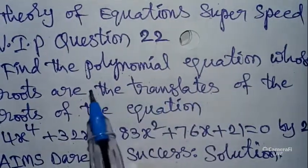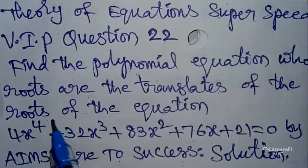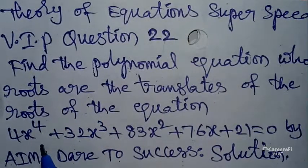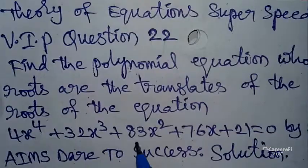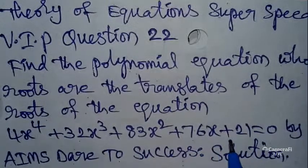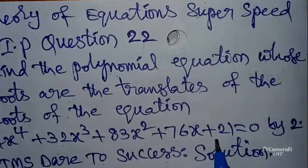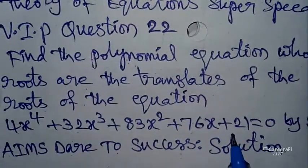Find the polynomial equation whose roots are the translates of the roots of the equation 4x⁴ + 32x³ + 83x² + 76x + 21 = 0 by 2. AIMS There to Success Solution.